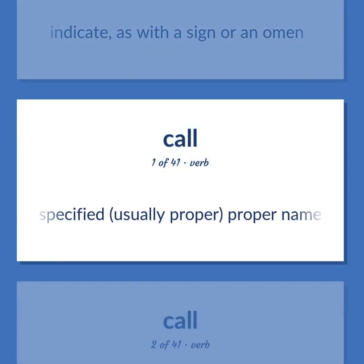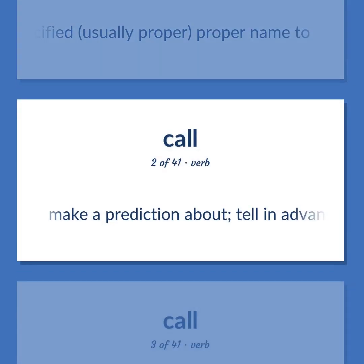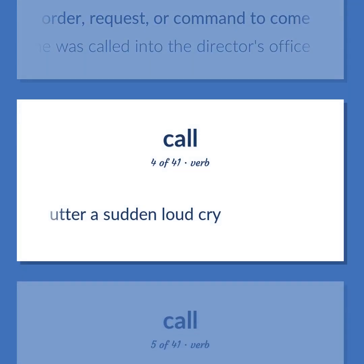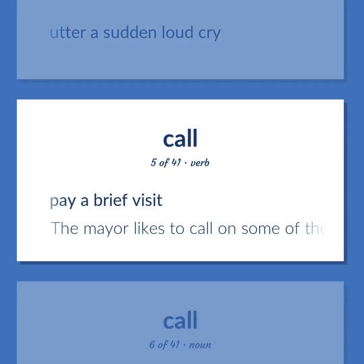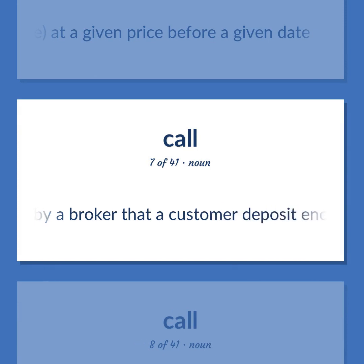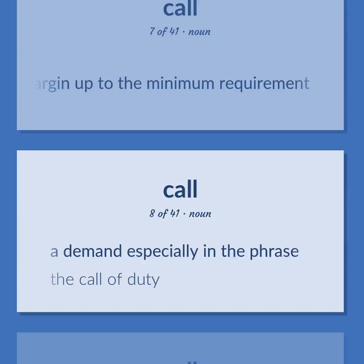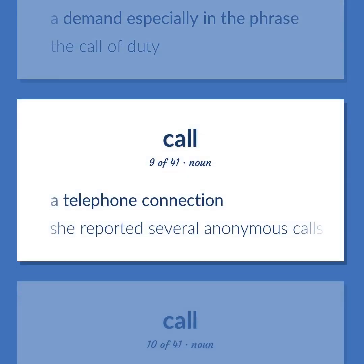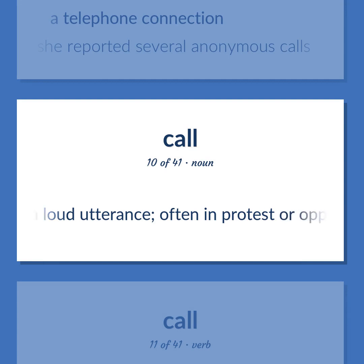Name: assign a specified, usually proper, name to. Make a prediction about; tell in advance. Call: order, request, or command to come — she was called into the director's office. Utter a sudden loud cry. Pay a brief visit — the mayor likes to call on some of the prominent citizens. The option to buy a given stock, stock index, or commodity future at a given price before a given date. A demand by a broker that a customer deposit enough to bring his margin up to the minimum requirement. A demand — especially in the phrase 'the call of duty.' A telephone connection — she reported several anonymous calls.